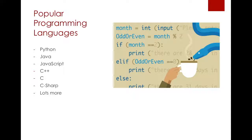JavaScript is also another language that's kind of a simpler version of Java. There's C++, C — these are all advanced languages, very popular and very old in the programming industry. And there are lots more: there are languages to control machines, languages for electrical circuits — the list is endless. But I'm talking about the most popular programming languages that are out there today.